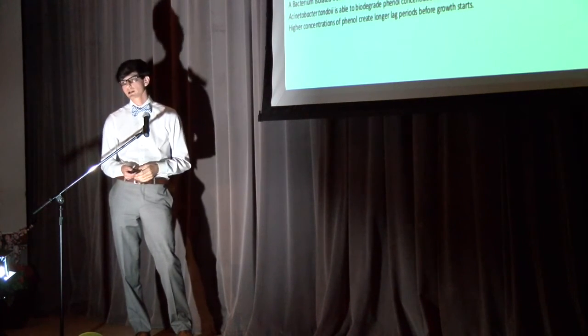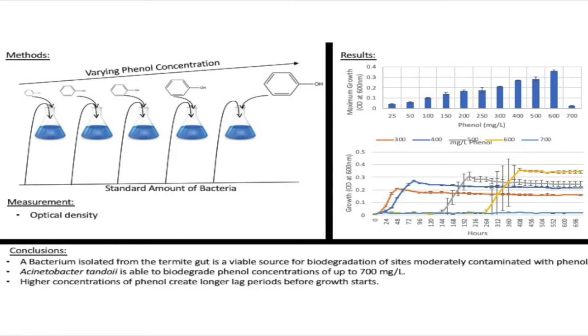In my second graph, I show that at low concentrations of phenol, growth starts immediately, but at higher concentrations of phenol, such as the 600 milligram per liter series shown in yellow, growth didn't start until 264 hours of the experiment. So there's delayed growth.